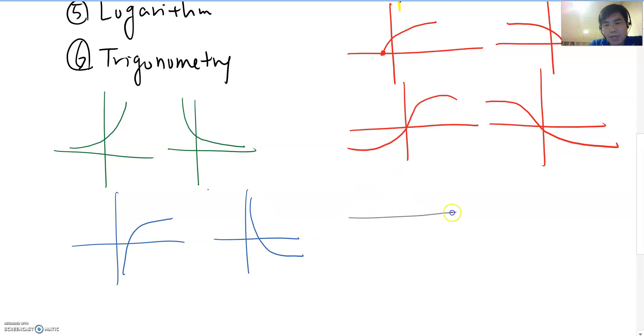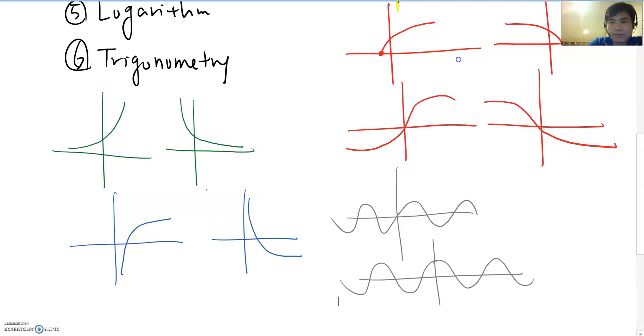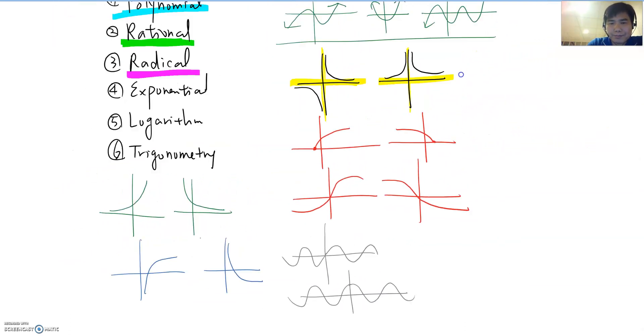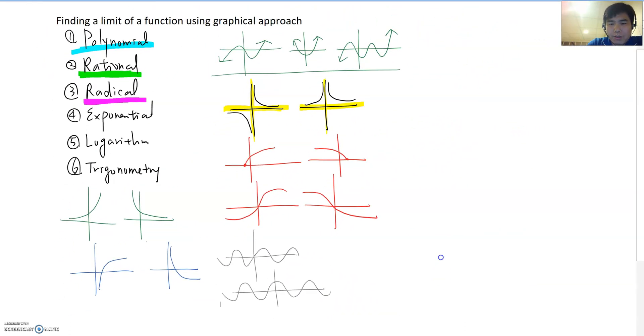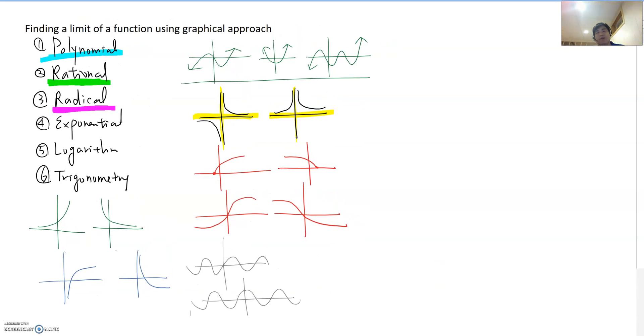And then there are so many different kind of a trigonometry function but if we just bring out the most famous sine and cosine function graphs, then looks like this and then cosine means something like that right. So like this we learned many different kind of functions and their graphs.